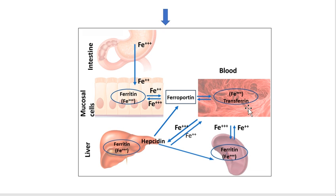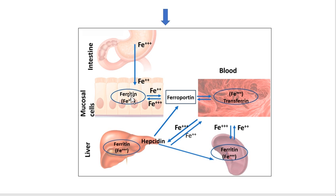Ultimately, via ferroportin, iron is transported with transferrin. It can either be stored in tissues as ferritin or go to the liver where it is again stored as ferritin. Hepcidin is the liver protein that regulates iron. Depending on demand and supply, these forms are interchangeable — from stored form iron can go to blood if needed.